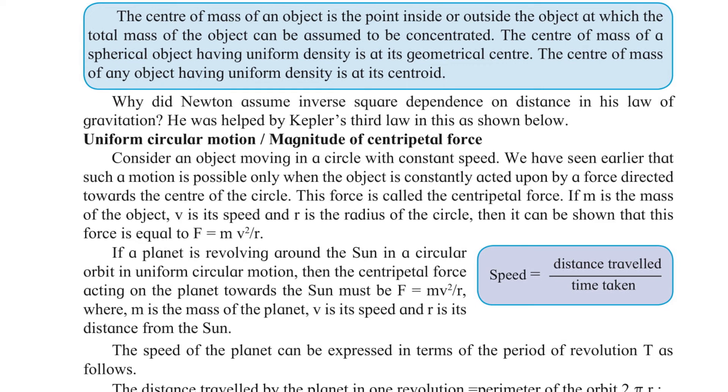Why did Newton assume inverse square dependence on distance in his law of gravitation? He was helped by Kepler's third law in this, which is shown here. Let's look at uniform circular motion or magnitude of centripetal force.